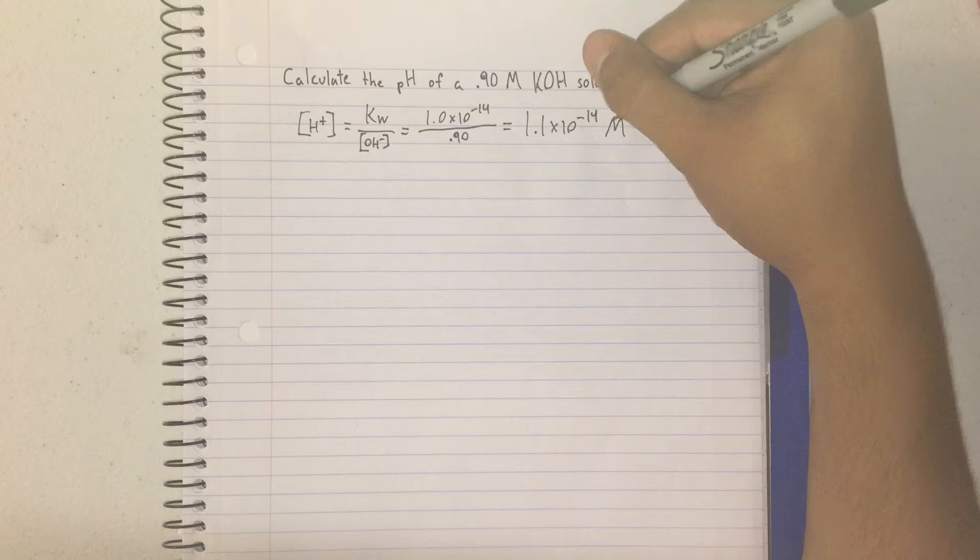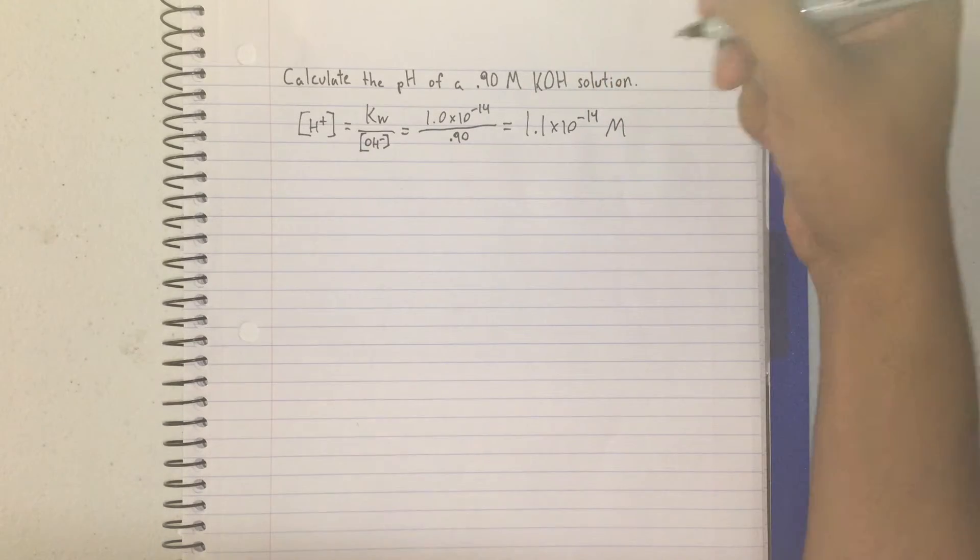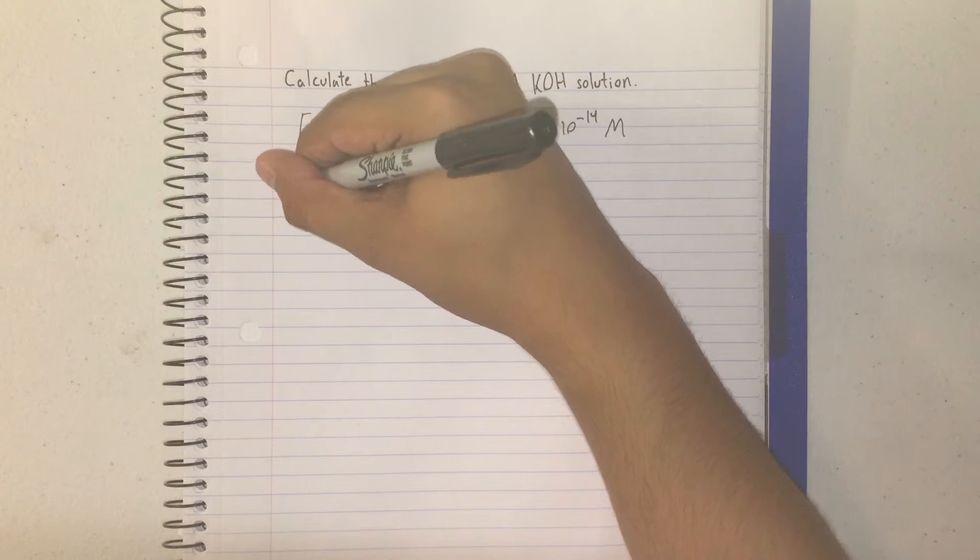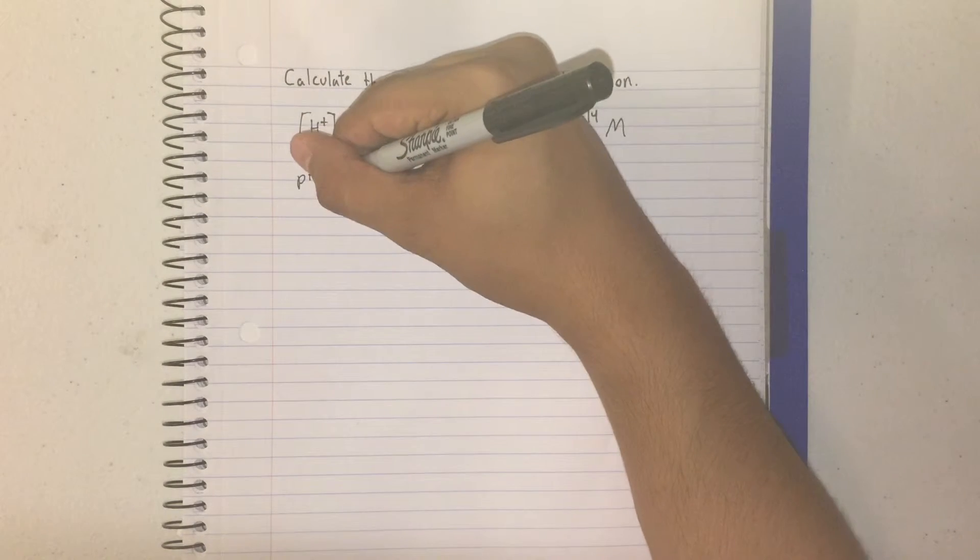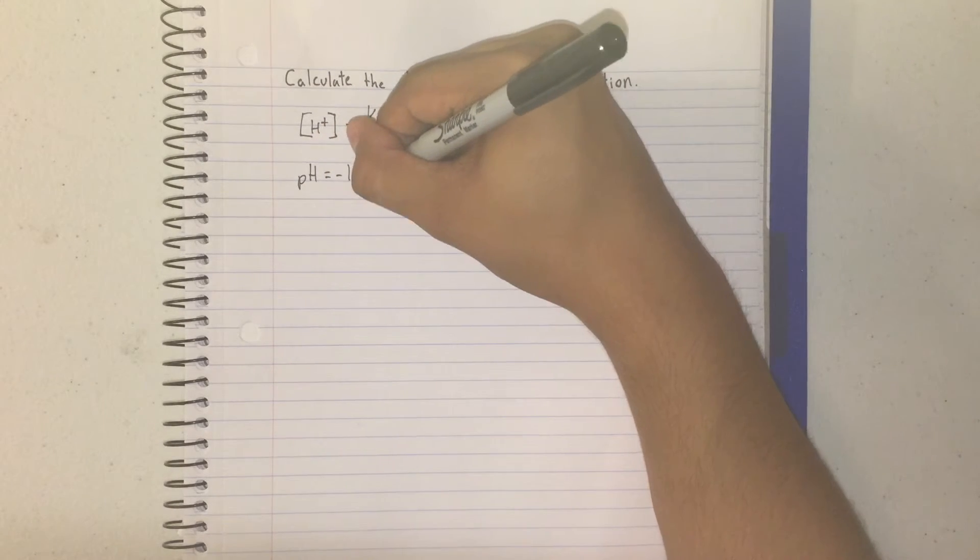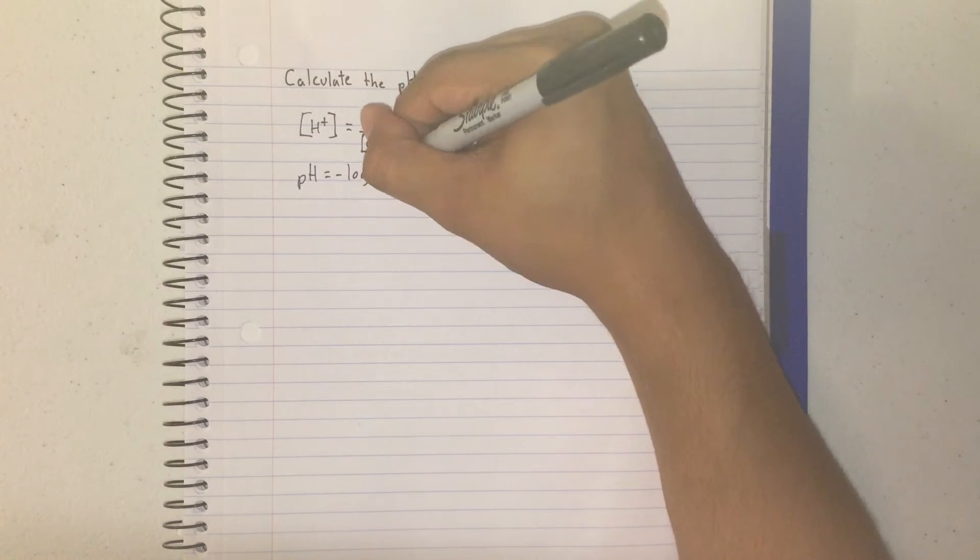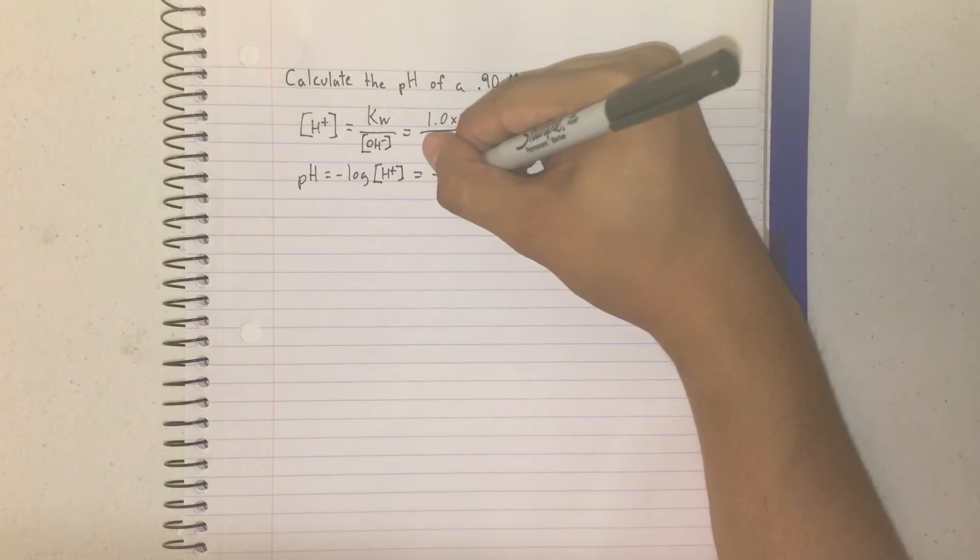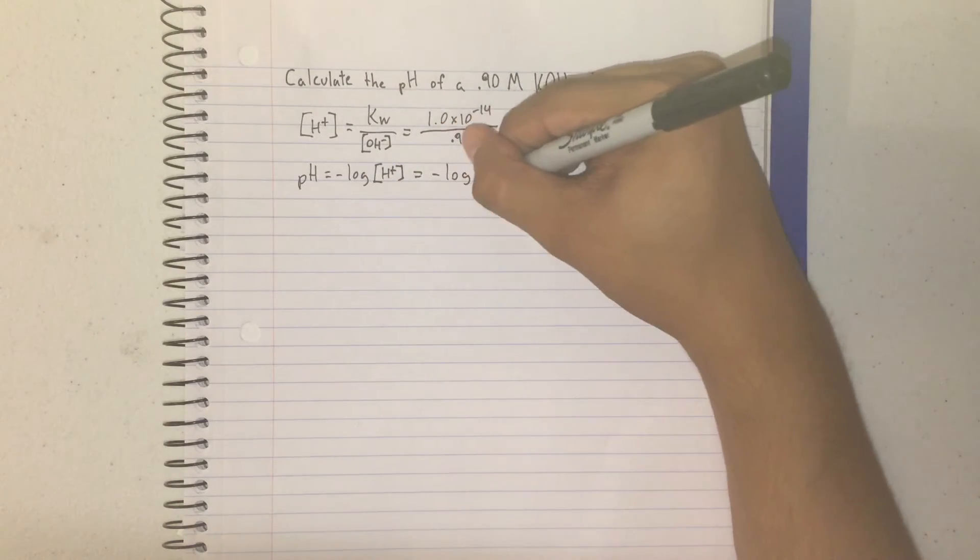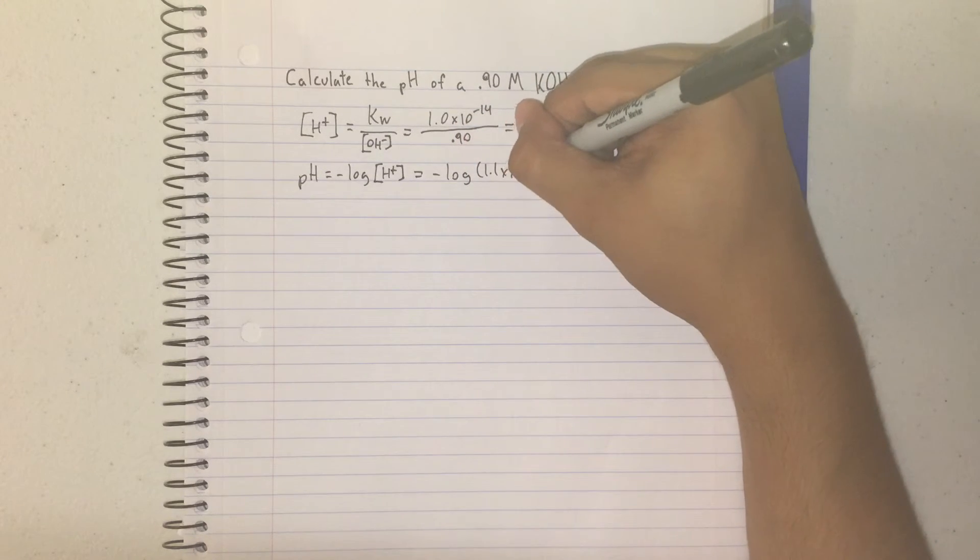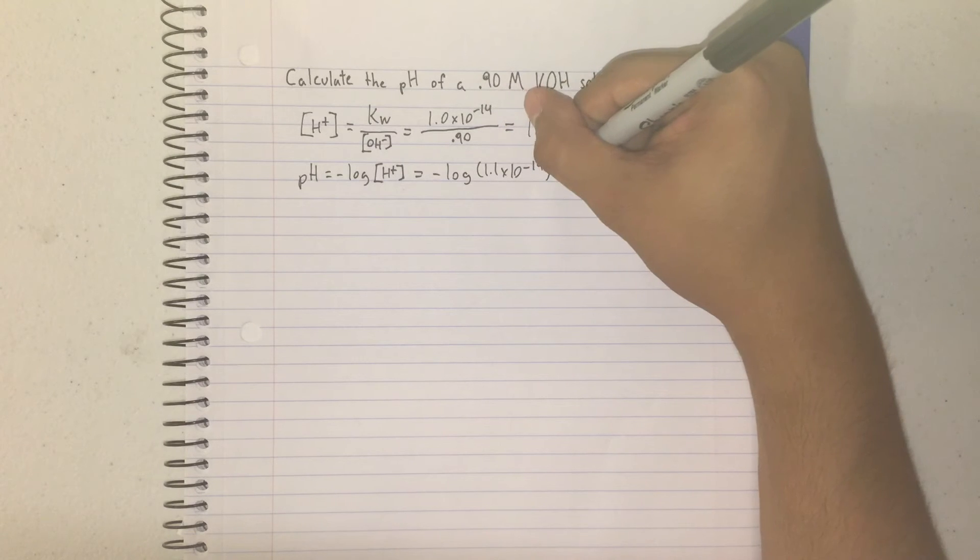The pH is then found from its defining equation. So the equation for pH is: pH equals the negative log of H plus, or hydronium, and that will equal out to the negative log of 1.1 times 10 to the negative 14, which we just solved for.